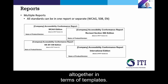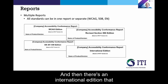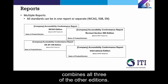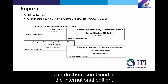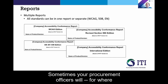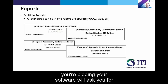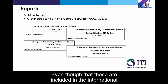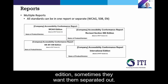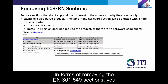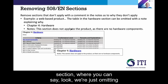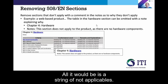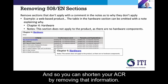There are four different report templates altogether: a WCAG edition of the ACR, a 508 edition, an EN 301 549 edition, and an international edition that combines all three. You can either do these three separately or combined in the international edition. Sometimes procurement officers will ask you for a particular version — they might say they want to see the revised Section 508 edition or the EN 301 549 edition, even though those are included in the international edition. In terms of removing EN 301 549 sections, you can put in comments like the hardware section where you say you're omitting this section because none of it applies — all it would be is a string of not applicables — and shorten your ACR by removing that information.